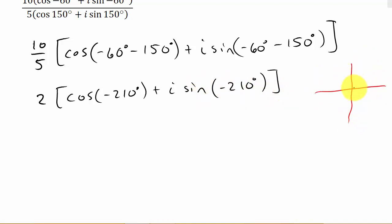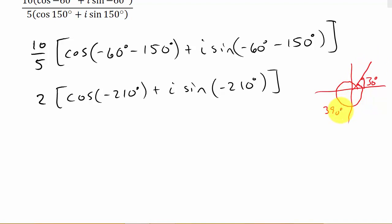This is just a quick explanation of coterminal angles. Let's say that we have an angle of 30 degrees. If we start here and go around and come back to this line, we went around 360 and then 30 more, so that would be 390 degrees. These are coterminal angles — they have the same terminal side. So the sine, cosine, or tangent of 30 degrees and 390 degrees are the same.